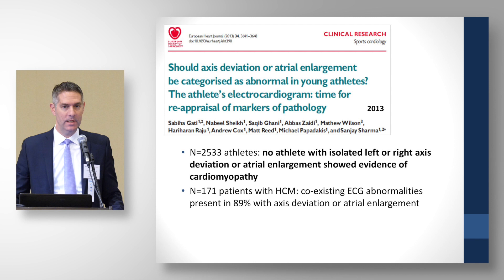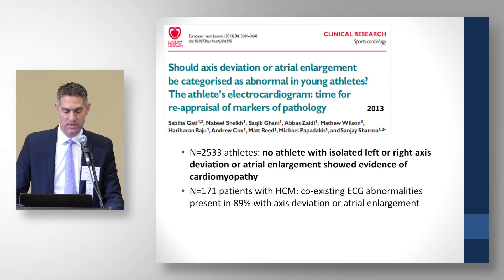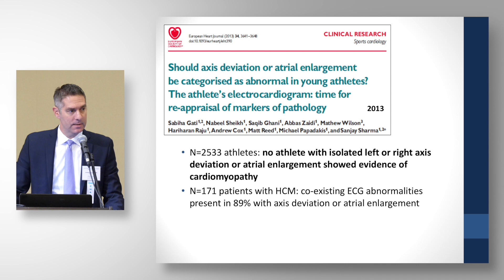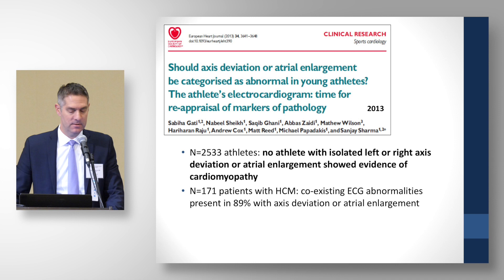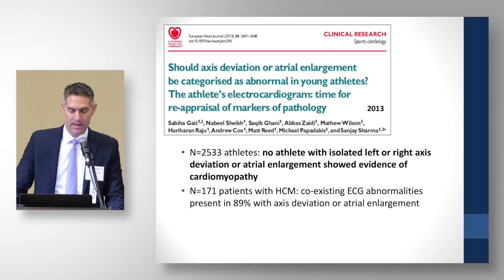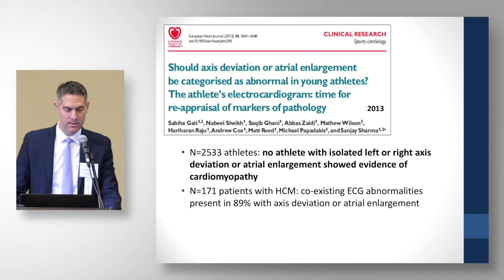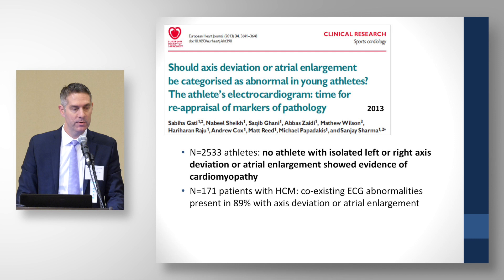The yellow group was driven by research — a study by Sanjay and his group looked at axis deviation and atrial enlargement in young athletes. In over 2,500 athletes, no athlete with isolated left or right axis deviation or left or right atrial enlargement showed evidence of cardiomyopathy as a single finding. In contrast, in 171 patients with HCM, coexisting ECG abnormalities were present in almost 90% who did have axis deviation or atrial enlargement — supporting axis deviation and atrial enlargement as warning flags only in isolation.